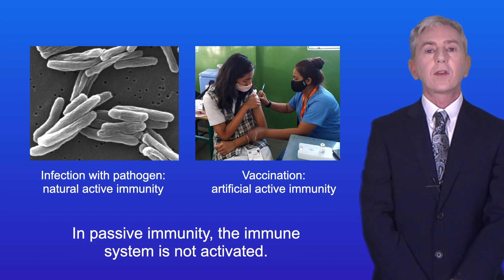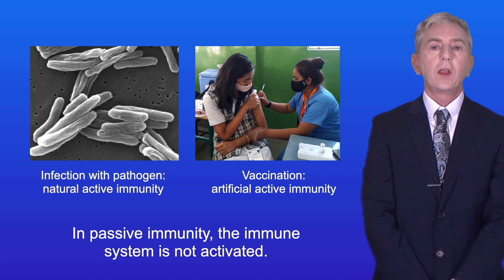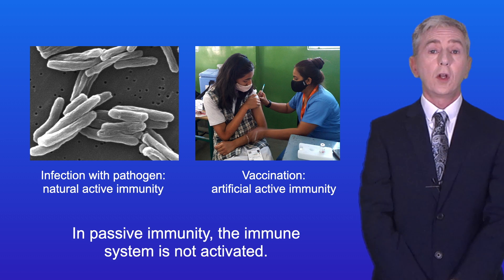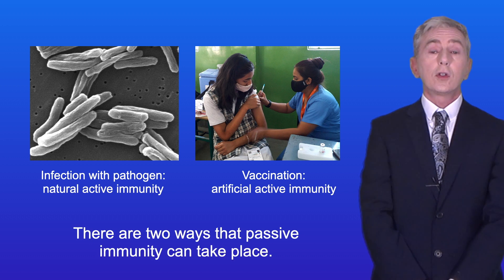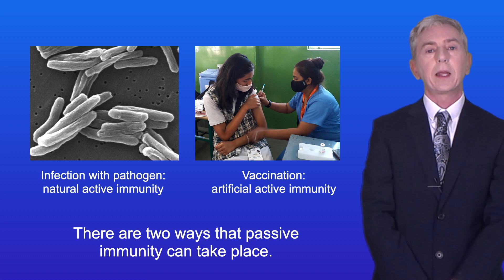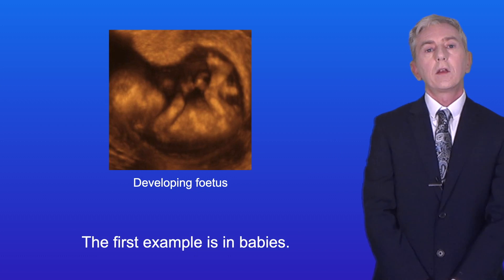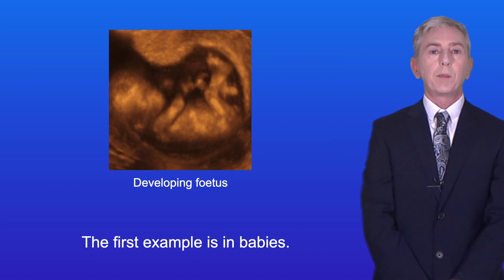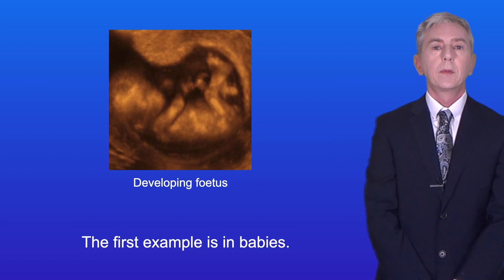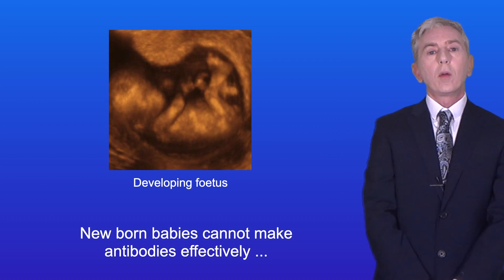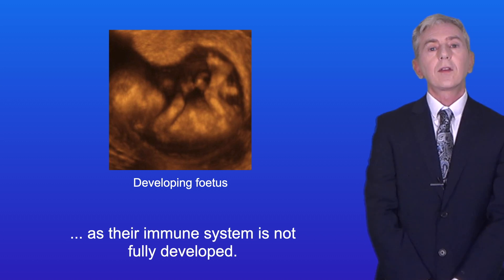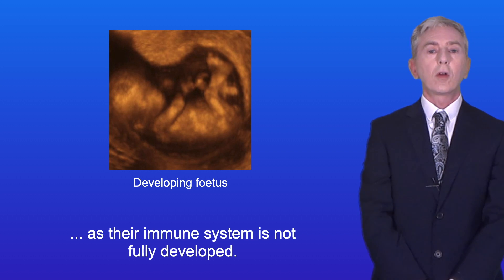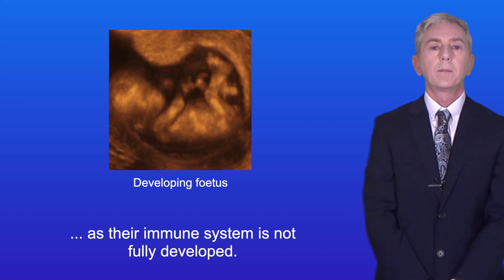In passive immunity, the immune system is not activated. There are two ways that passive immunity can take place. The first example is in babies. Newborn babies cannot make antibodies effectively, as their immune system is not fully developed.